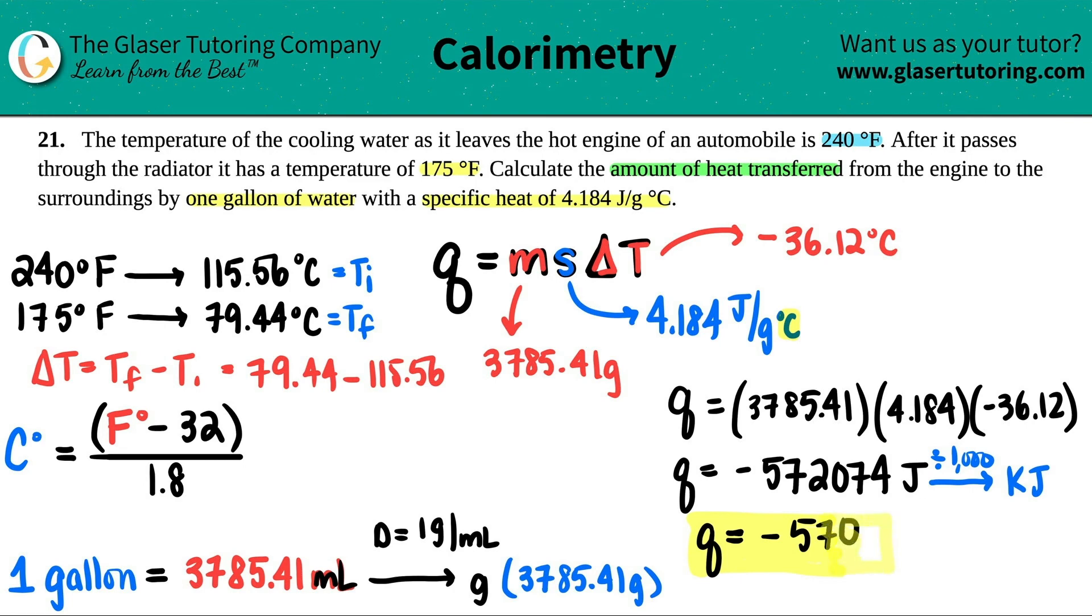Now the question did ask how much heat was transferred. The negative over here just signifies that in this case, the energy was lost. Heat was lost here. But remember, it's just going to be transferred. So the actual amount isn't going to include the negative number. The negative is just telling you that in this case it was lost, but the transferred amount is a positive amount.